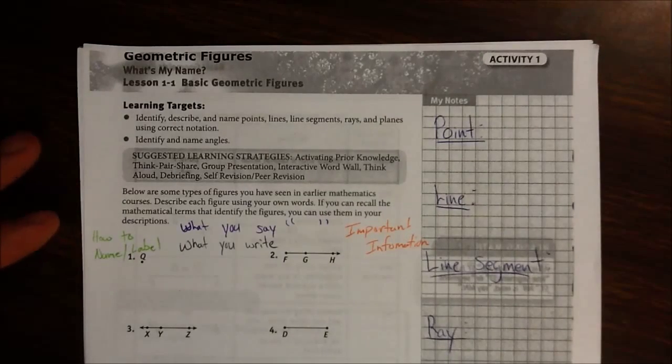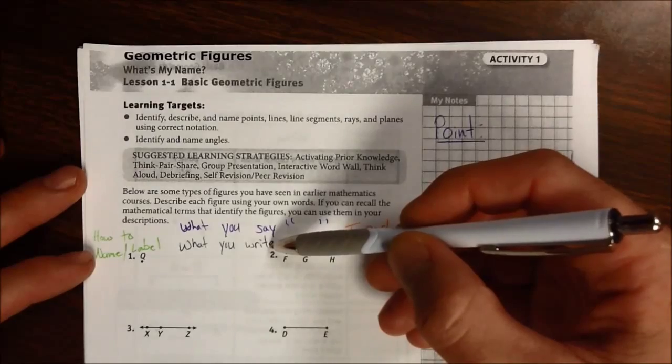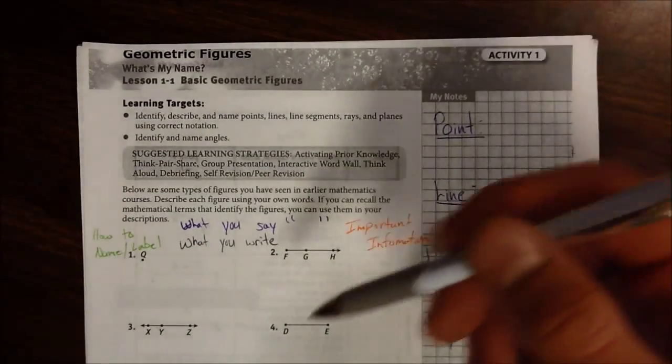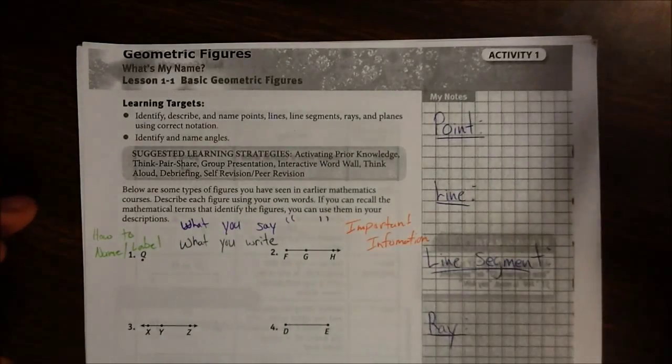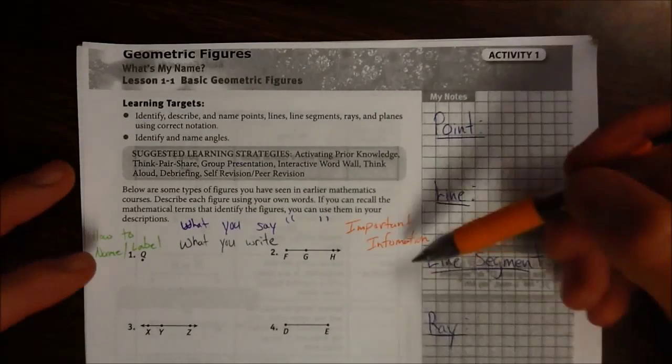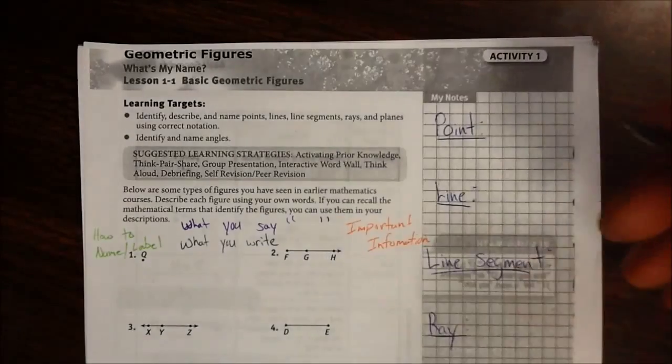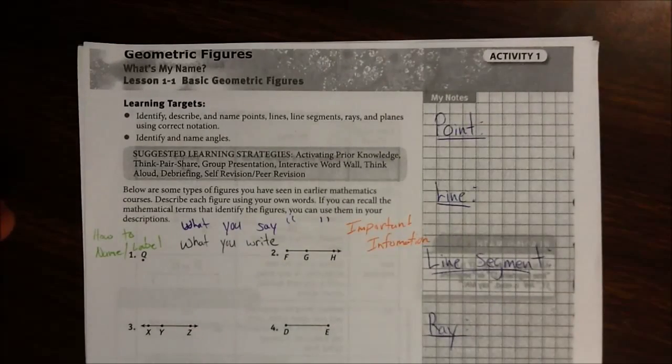In black ink, I'm going to write what you write. So what is the notation, what's the shorthand notation for these different geometric figures? In orange ink, I'll have some important information, just kind of generic comments on the material.